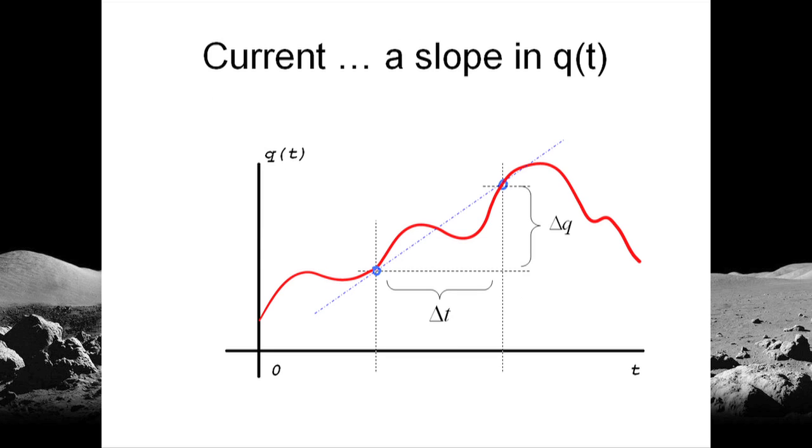Well, we have learned to identify currents with a slope, a slope in the graphic of q versus t. The average current is a slope of a secant, this one. And the instantaneous current is a slope of a tangent, like this one. A bit more.